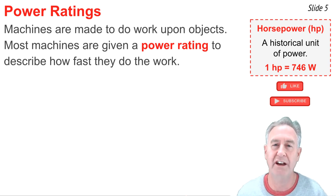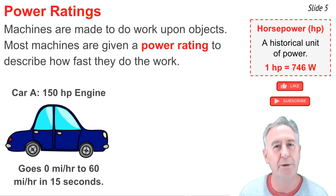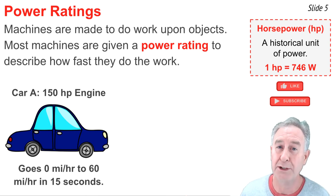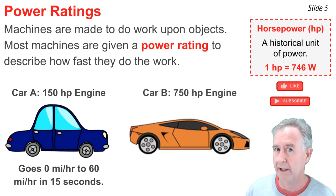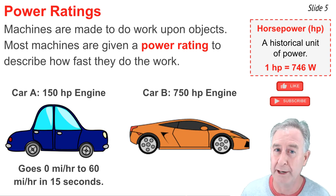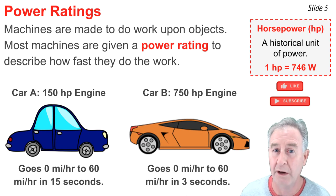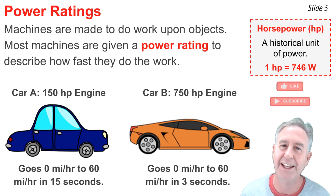To illustrate the idea of a power rating, let's consider two car engines. This is car A with its 150 horsepower engine. And with that engine, it can go from zero to 60 miles per hour in 15 seconds. But, this is car B. Car B has a 750 horsepower engine. 750 horsepower is five times the horsepower of car A. And as such, it can do its work at a five times greater rate, which would mean that it could go from zero to 60 miles per hour in one-fifth of the time in three seconds.